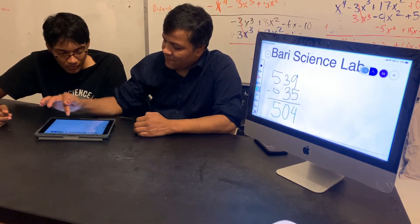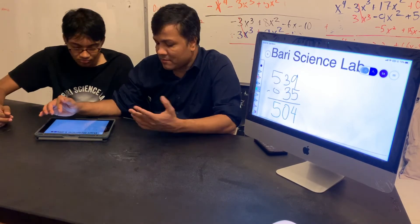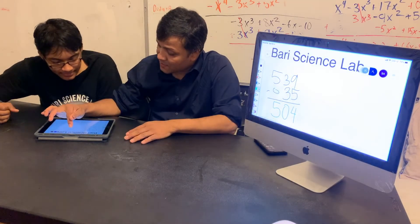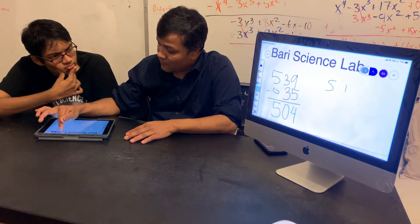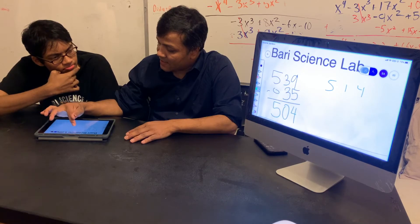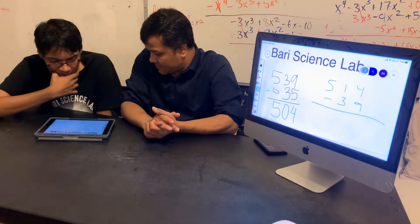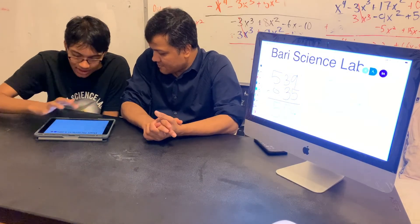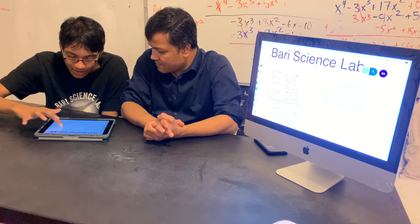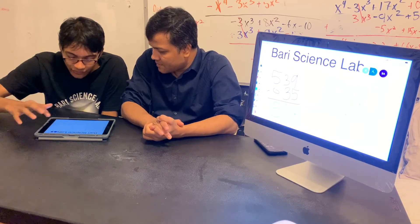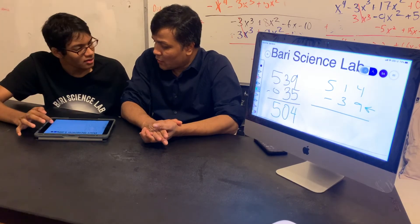Now let's say five hundred fourteen minus thirty-nine. I'm going to give you 514 minus 39. I have to start by the first column: four minus nine — I can't do this one. So you have to borrow from the neighbor.